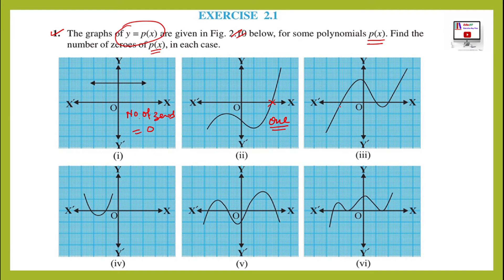Graph 3 ki baat kar hai. It is intersecting. Graph is intersecting at x-axis at, you know, 3 points. Number of zeros in this case will be 3.